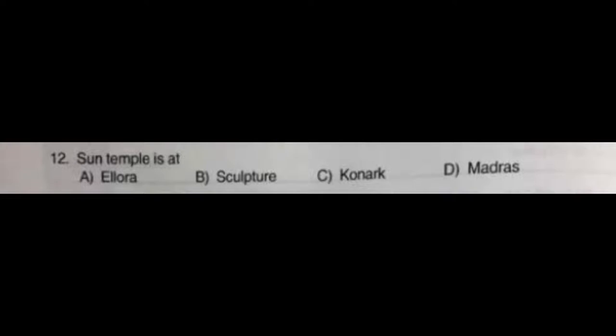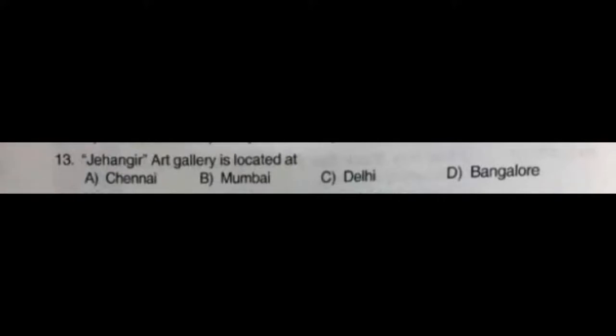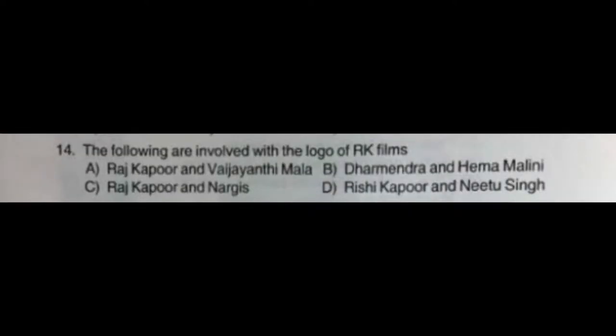Question number twelve: Sun Temple is at — option A: Ellora, option B: sculpture, option C: Konark, option D: Madras. The correct answer is option C: Konark. Question number thirteen: Jehangir Art Gallery is located at — option A: Chennai, option B: Mumbai, option C: Delhi, option D: Bangalore. The correct answer is option B: Mumbai.